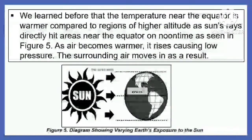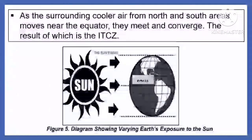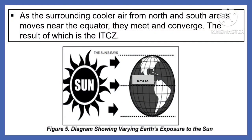We learned before that the temperature near the equator is warmer compared to regions of higher latitude. As the sun's rays directly hit areas near the equator at noontime, as seen in Figure 5, air becomes warmer and rises, causing low pressure. The surrounding air moves in as a result. As the surrounding cooler air from the north and south areas moves near the equator, they meet and converge, and the result of which is the ITCZ.